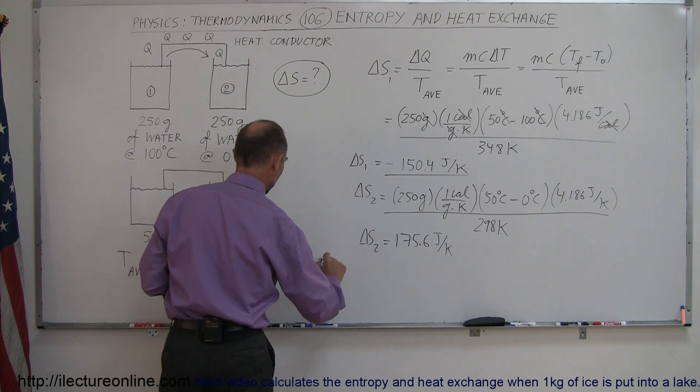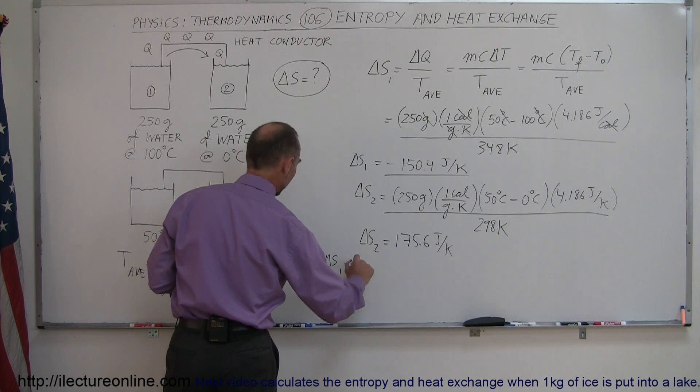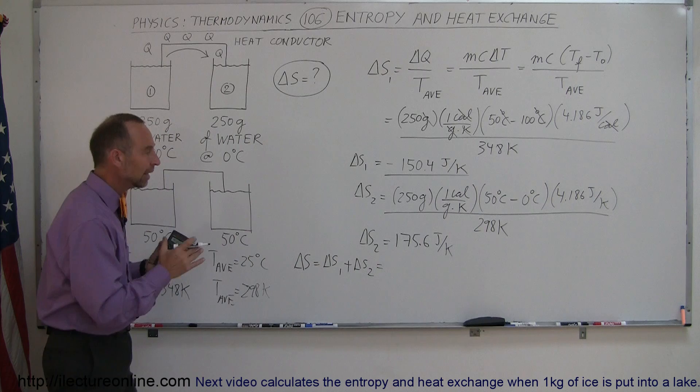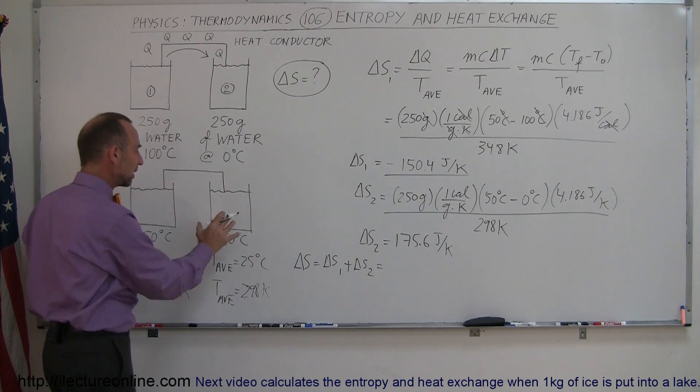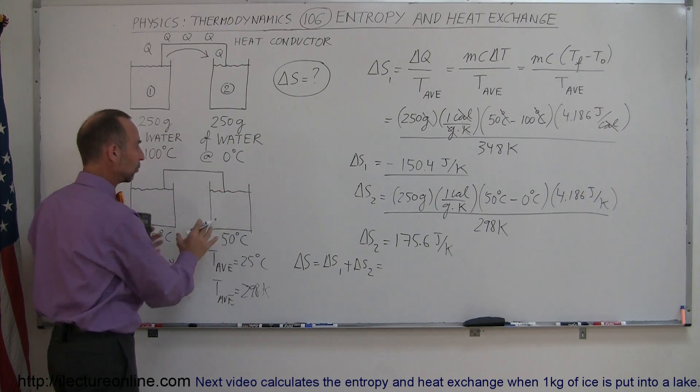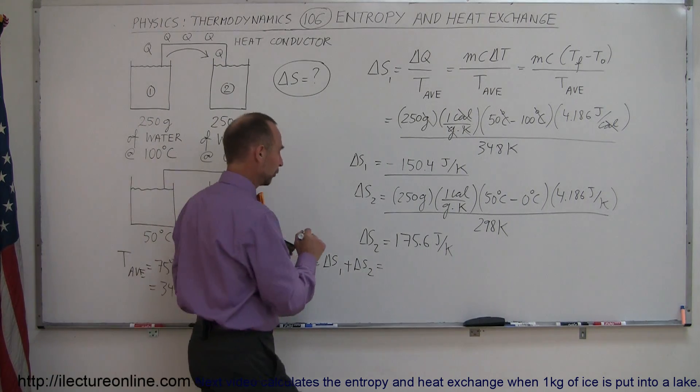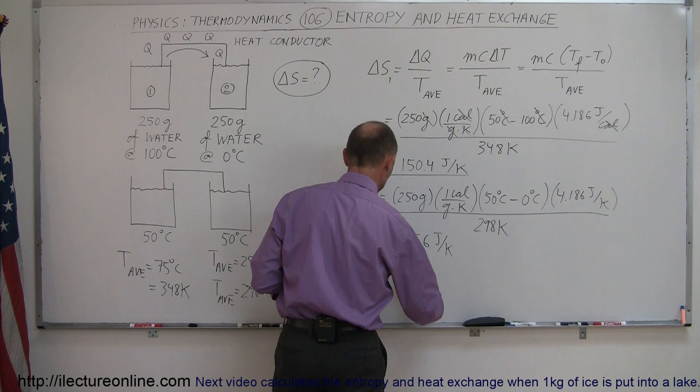Now, for the total change in the entropy, delta S, that is equal to delta S1 plus delta S2. So, what you can see here is that you have to add the entropy change of every piece of that heat exchange. In this case, there's two cups of water, so we have to add the entropy change for both cups of water.